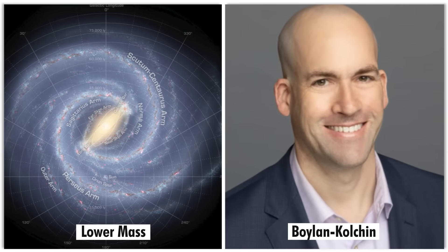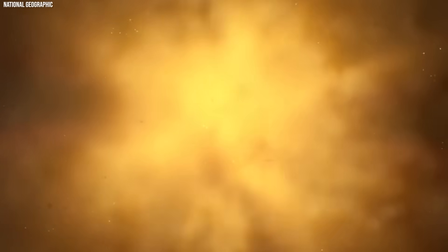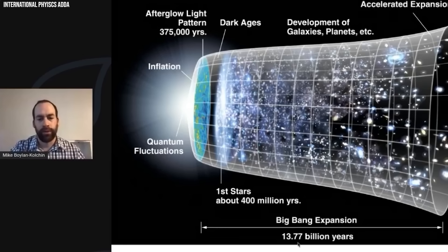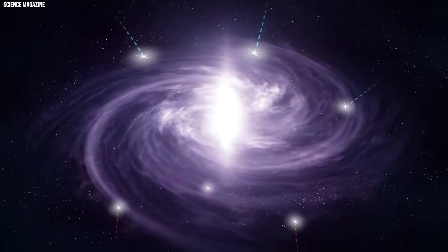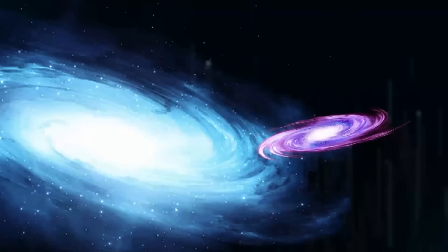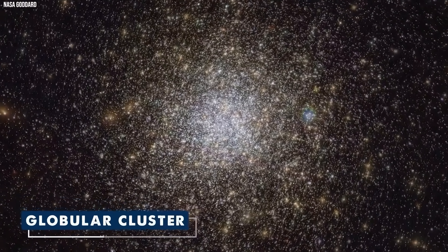While acknowledging the lower mass of this galaxy compared to those scrutinized by Boylan Colchin, Williams speculates on the potential applicability of this intense star formation to higher-mass galaxies at similar redshifts. However, Boylan Colchin remains cautious, considering the small size of this object, just 105 light-years across, significantly smaller than typical galaxies. He contemplates the possibility that it might be a globular cluster instead.